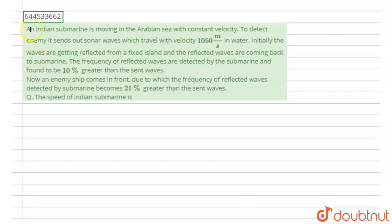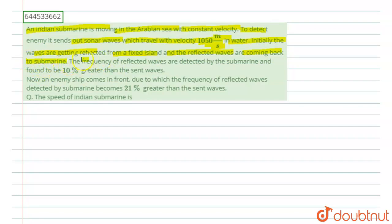In this question, it is given that an Indian submarine is moving with constant velocity. To detect the enemy, it sends out a sonar wave which travels with a velocity of 1050 metres per second in water. The waves are getting reflected from a fixed island and the reflected waves are coming back to the submarine. The frequency of the reflected wave detected by the submarine is found to be 10% greater than the sent waves.